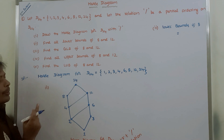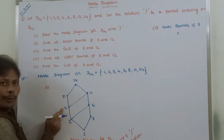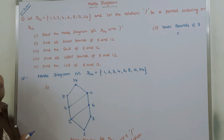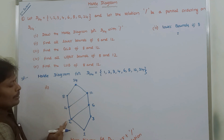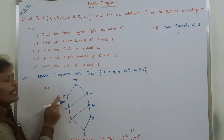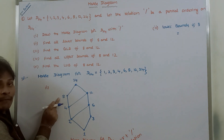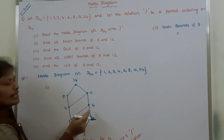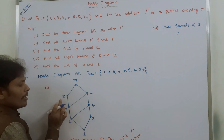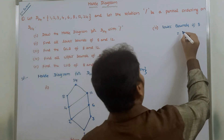Lower bounds of 8: 4 divides 8, so 4 is related with 8. 2 divides 4 and 4 divides 8, so automatically 2 divides 8. Also, 1 divides 8. However, 6 does not divide 8 and 3 does not divide 8. Therefore, only 1, 2, and 4 are the lower bounds of 8.